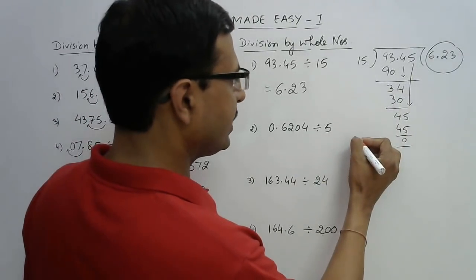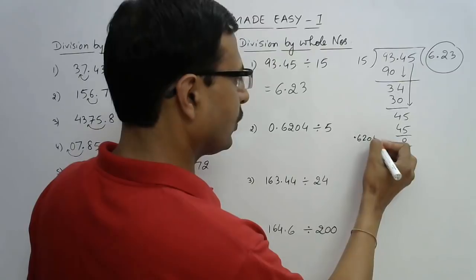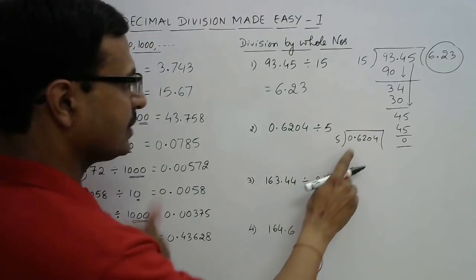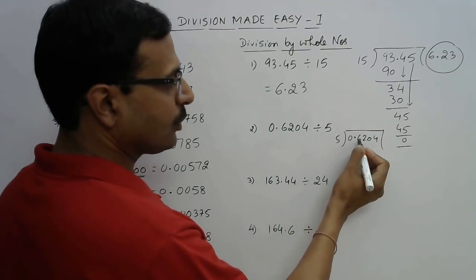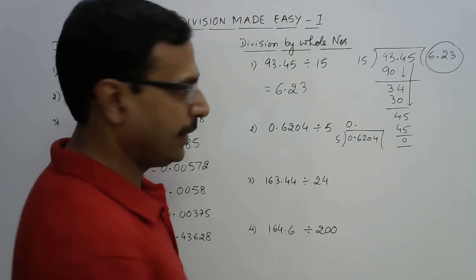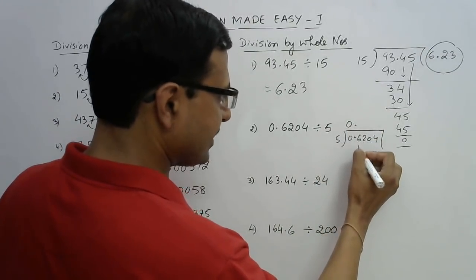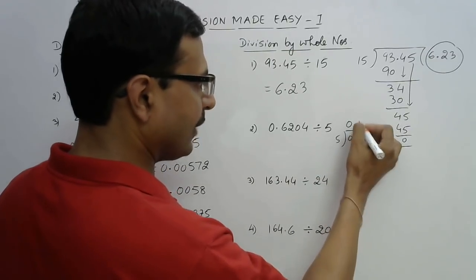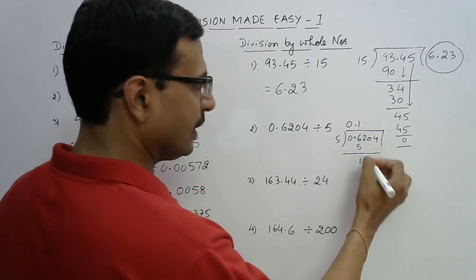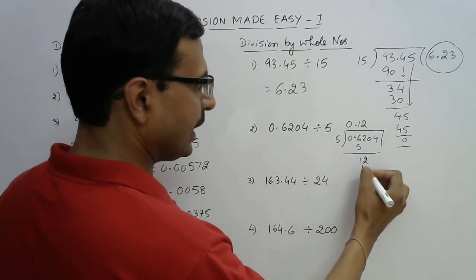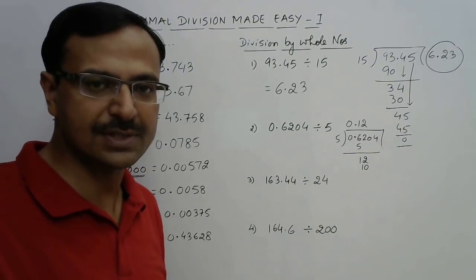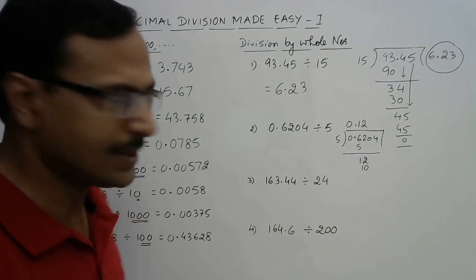We write 0.6204 divided by 5. The 0 before the decimal does not help, so we consider the 6 first — meaning our answer will also start with 0-point. 5 goes into 6 once, so we put 1 in the quotient. Then 12 comes down: 5 × 2 = 10, and so on with the traditional division process.